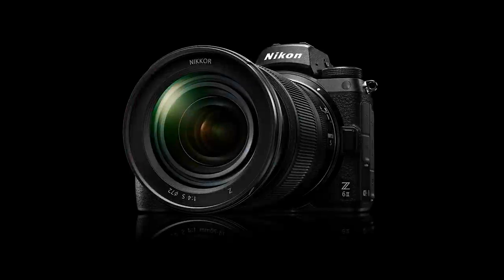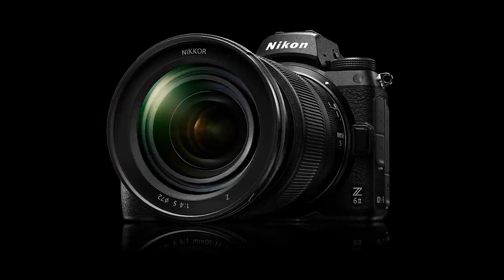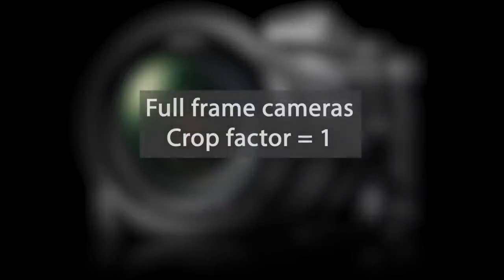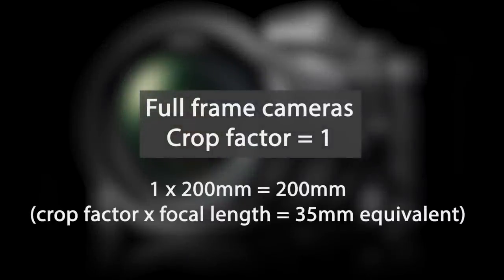How much closer can be calculated using the crop factor. With the Nikon Z6, or any full frame camera, the crop factor is 1, so 1 times 200mm equals 200mm. This means the crop factor has no effect on focal length.